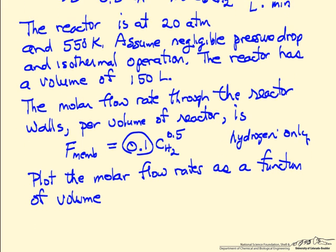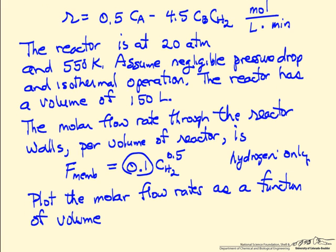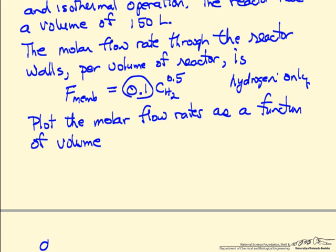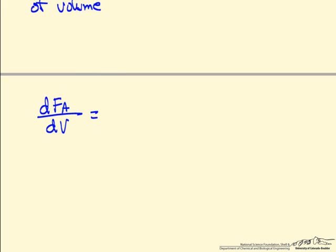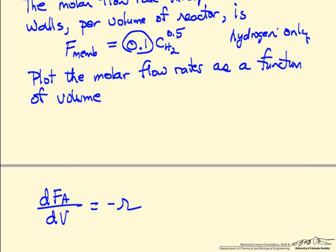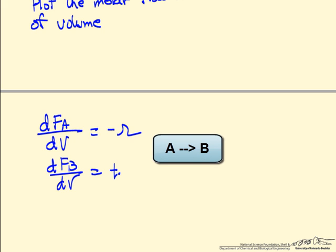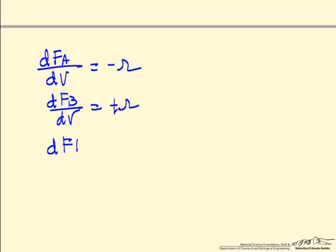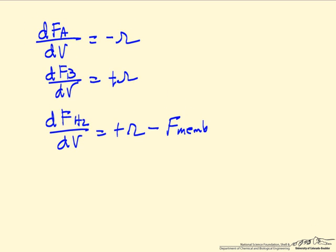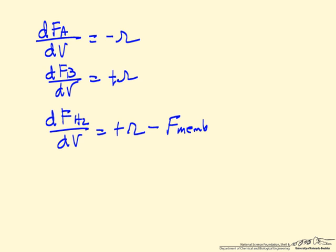The question is: what do the molar flow rates look like as a function of volume? We write down mass balances. The change in flow rate of A with respect to volume is minus R, meaning A is reacting in the forward direction and reforming in the reverse. The flow rate of B has positive R. For hydrogen, it's also positive R minus the flow rate per volume through the membrane. The rate R equals K-forward times concentration of A, minus K-reverse times concentration of B times concentration of hydrogen.